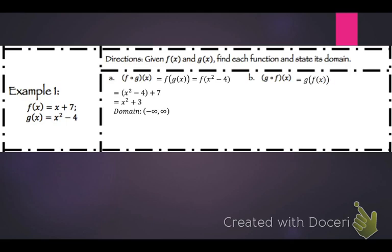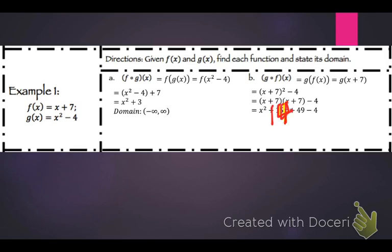For g of f of x, f of x is x plus 7. Substituting gives x plus 7, quantity squared, minus 4. Expanding x plus 7 squared gives x squared plus 14x plus 49 — note: the coefficient should be 14, not 15. Subtracting 4 gives x squared plus 14x plus 45.